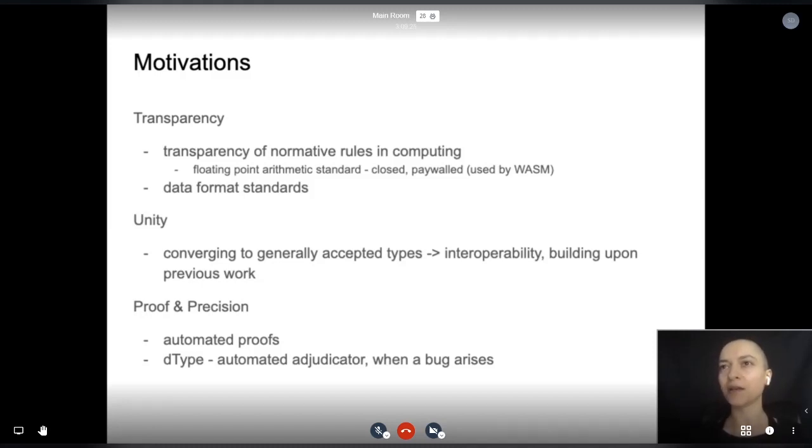Unity: if we want to truly build the Babylon tower of software, a convergence to generally agreed upon types must happen. A good side effect of having an on-chain standard is that you can always use it to verify that your software follows it closely, and you can use that software, in this case dType, as a source of truth.